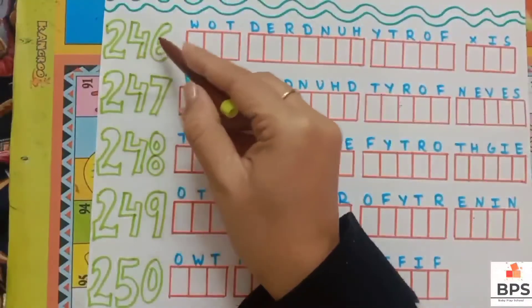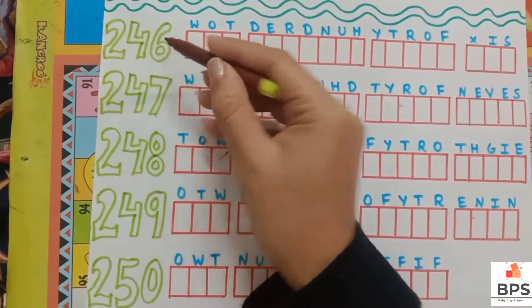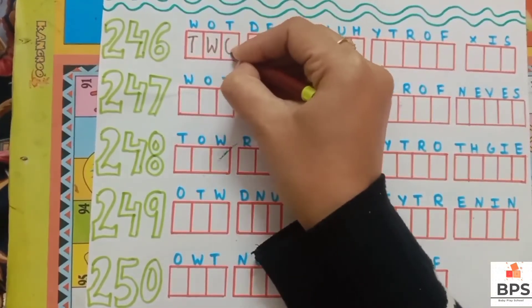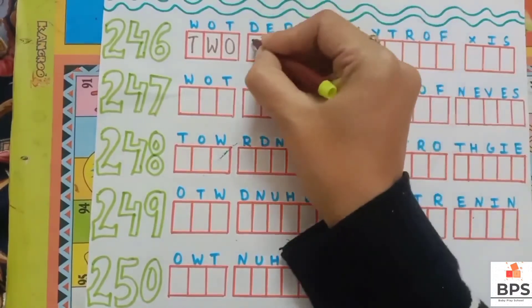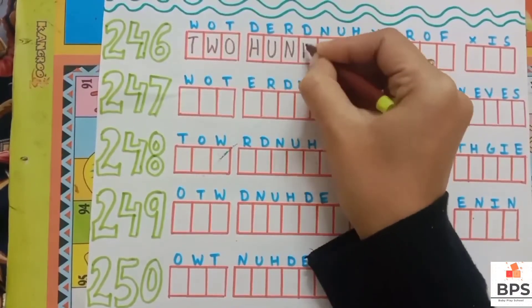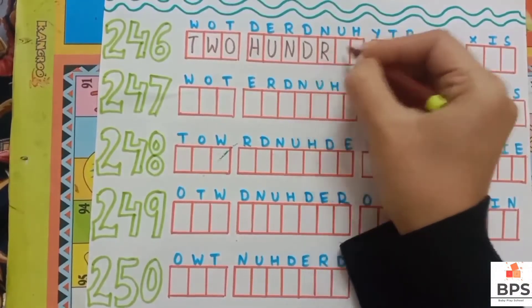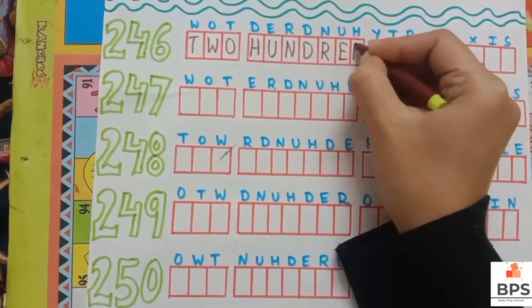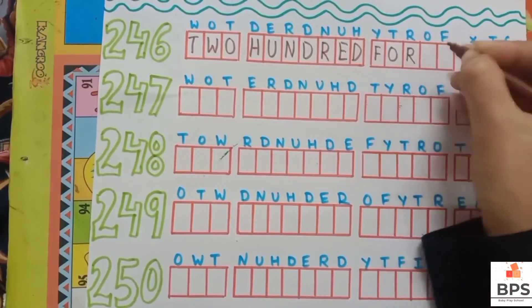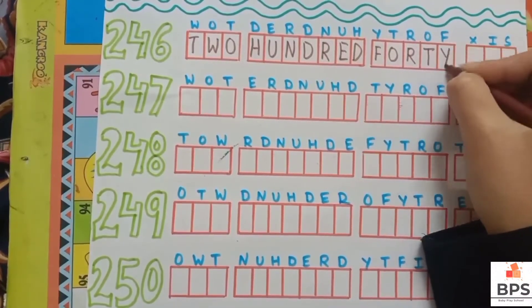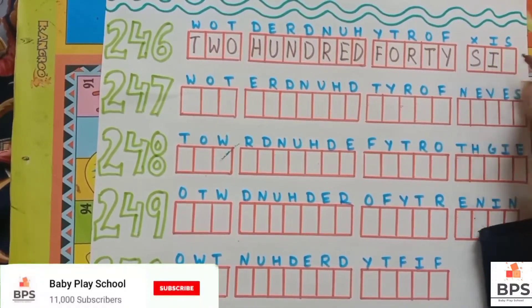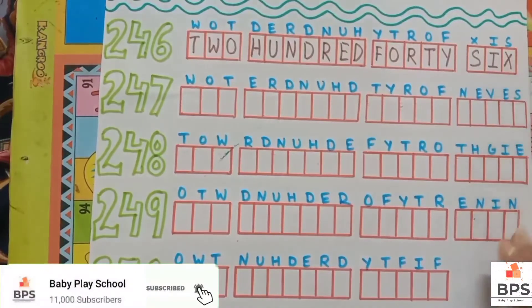Two hundred forty six — 246. T-W-O, 2; H-U-N-D-R-E-D, 100; F-O-R-T-Y, 40; S-I-X, 6. Two hundred forty six — 246.